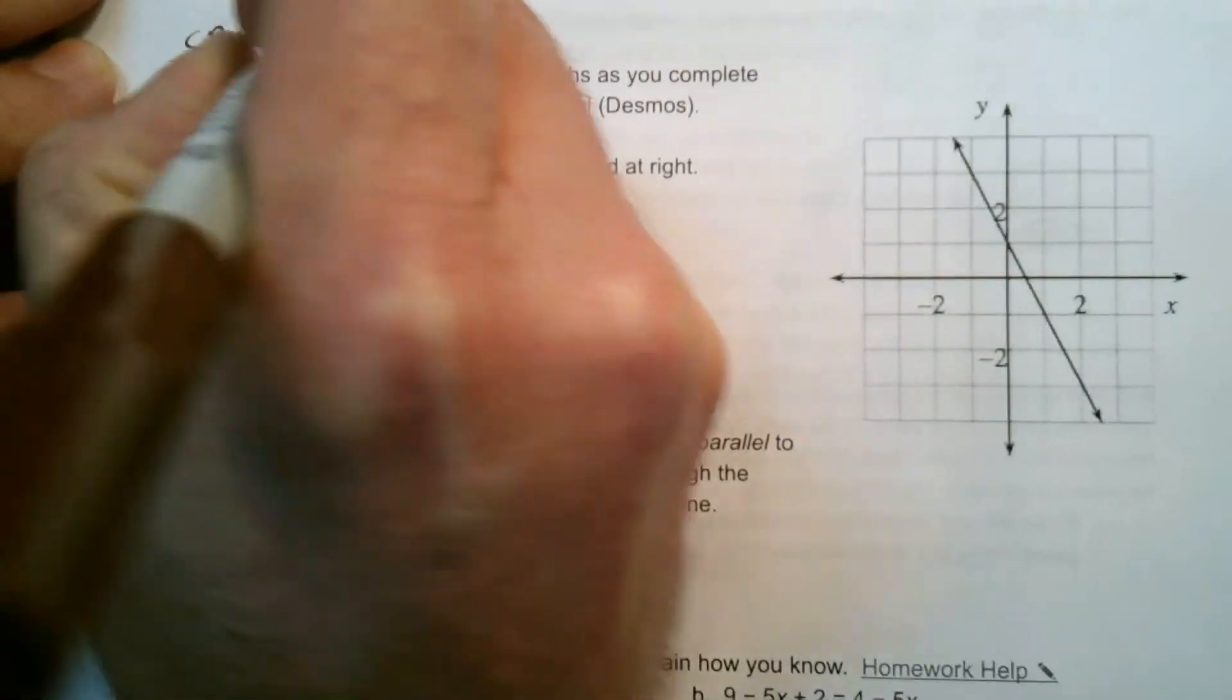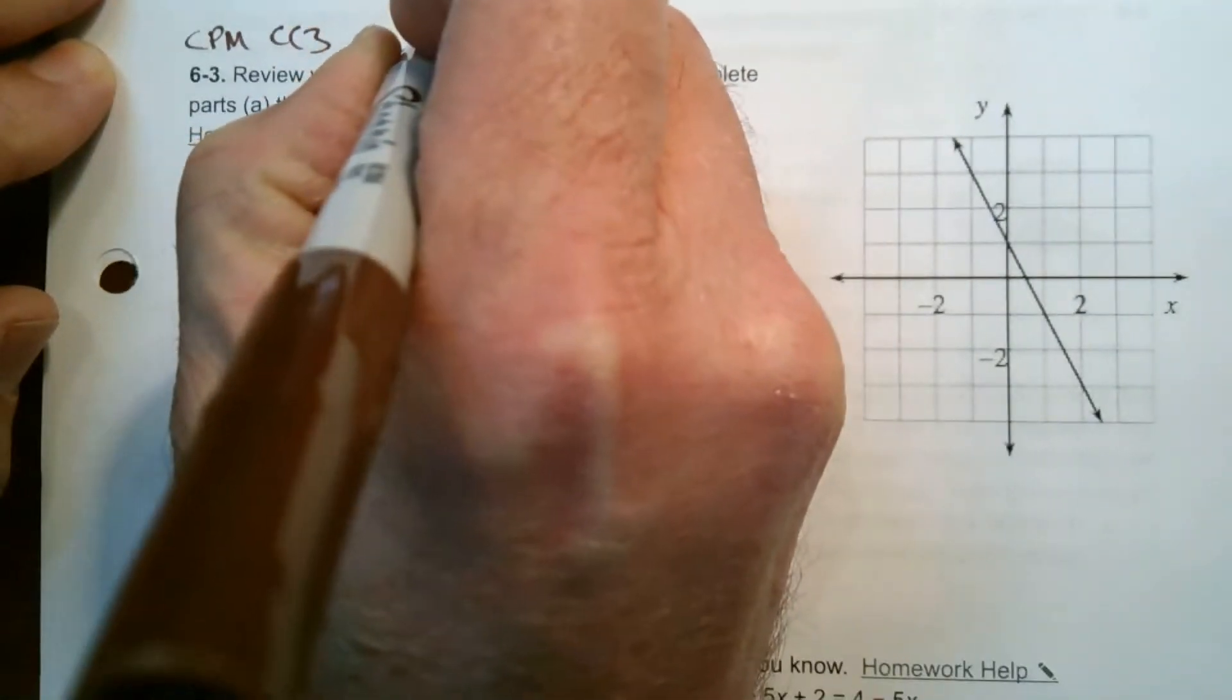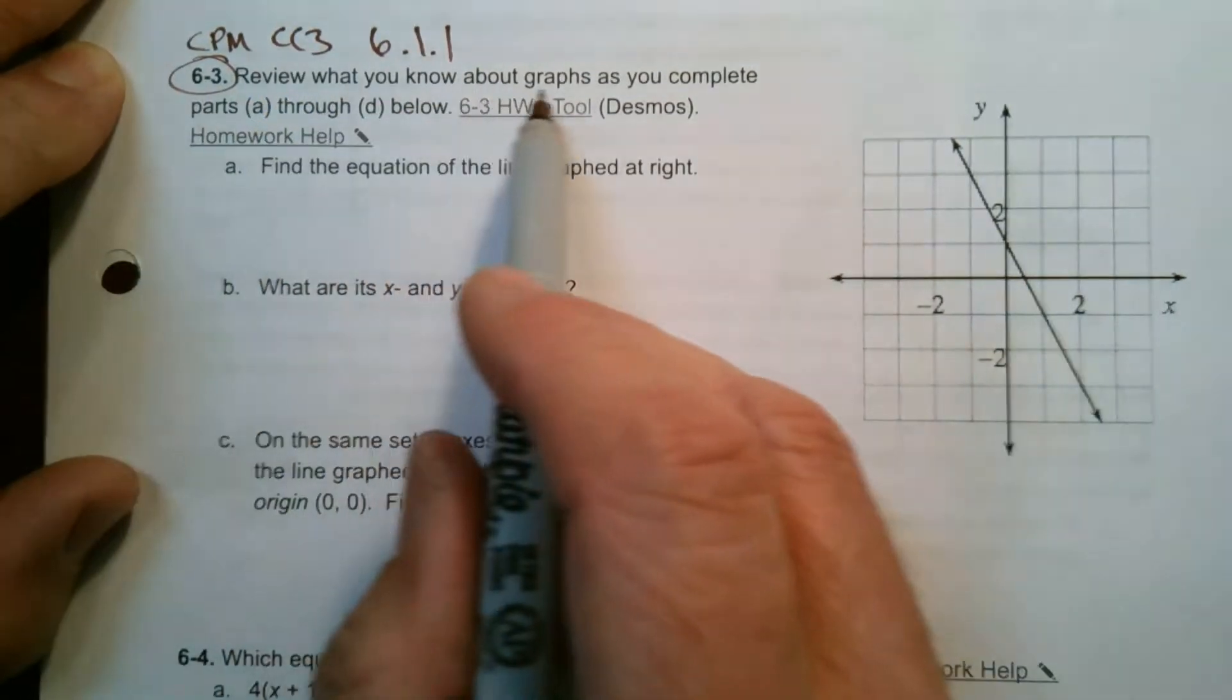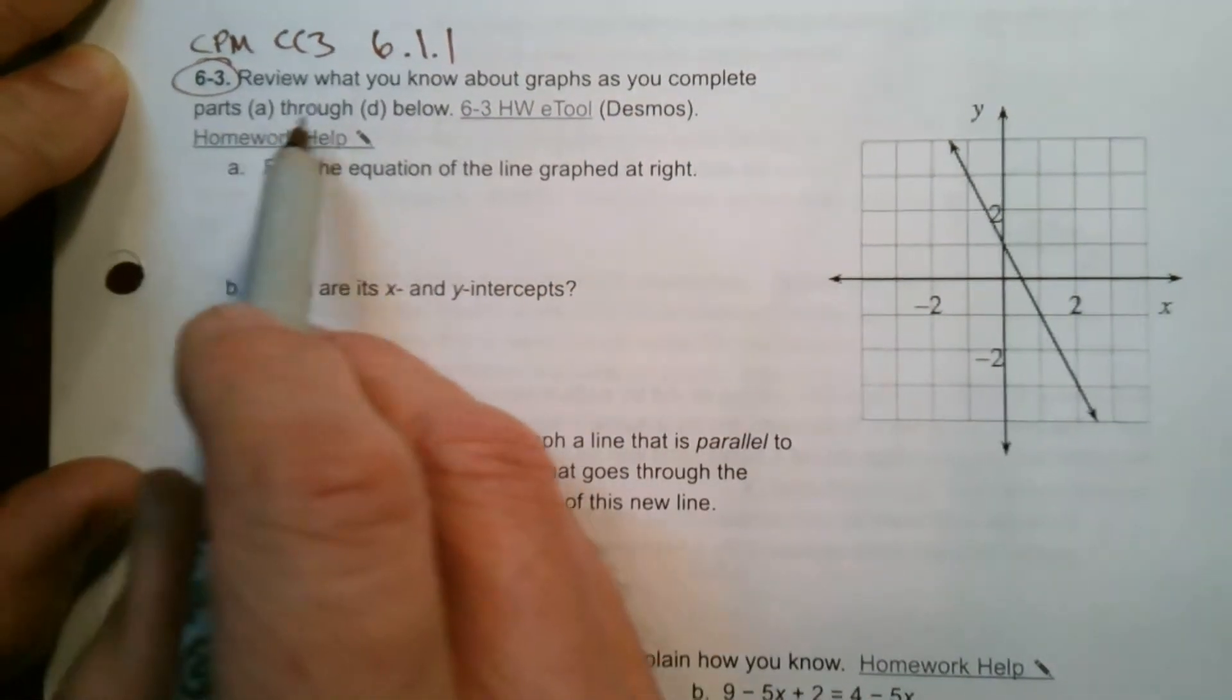So this is from CPM. I'm taking this problem from CPM course three, and this is section 6.1.1, specifically number 6-3. So it says review what you know about graphs as you complete parts A through D.